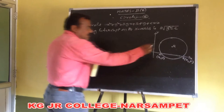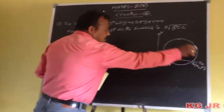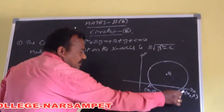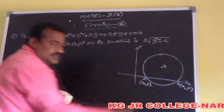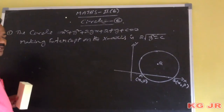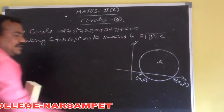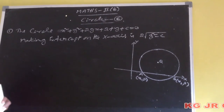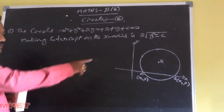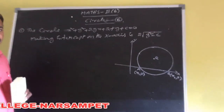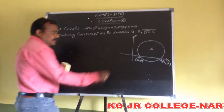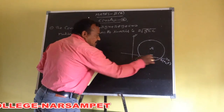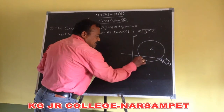The circle cuts the x-axis at two points. Here we consider the two points a and b. We are taking the points upon the x-axis: a at (x1, 0) and b at (x2, 0). This is the intercept on the x-axis.